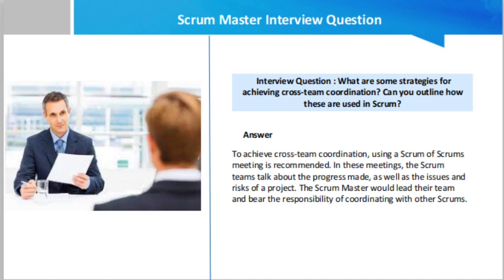The interview question generally is: what are the strategies for achieving cross-team functional coordination, and which strategies are used in Scrum? To achieve cross-team coordination, using a Scrum of Scrums meeting is recommended. In these meetings, the scrum team talks about the progress made as well as the issues and risks of a project. The scrum master would lead their team and bear responsibility for coordinating with other scrums.